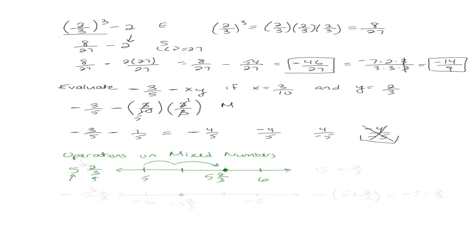We've usually stayed away from negative mixed numbers because it takes some understanding. So let's say we have negative 5 and 2 thirds. Remember that the operation between the whole number and the fraction is addition — between 5 and 2 thirds, there's an addition sign in there. People get confused and think it's multiplication because there's nothing written, but it's actually addition.